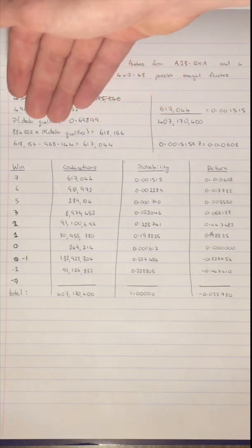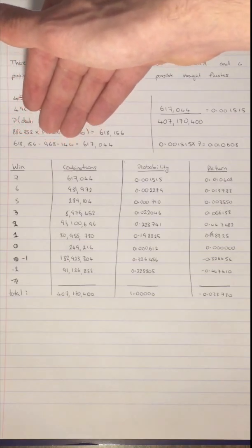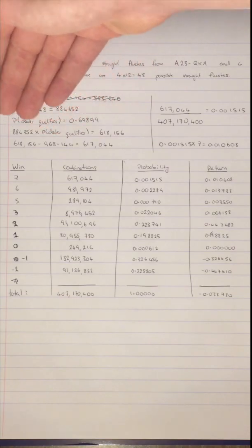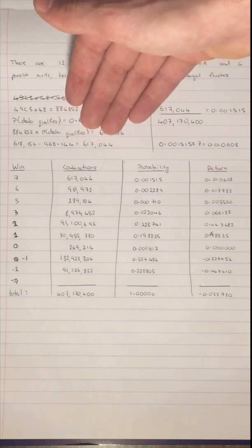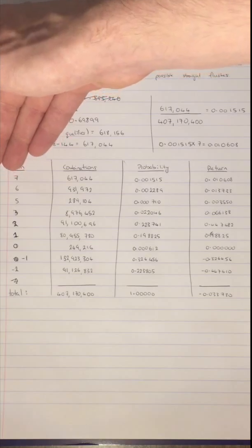However, in that, there are 968 possible combinations where the dealer wins and 144 possible combinations where the dealer draws. So, we minus these two values to gain 617,044 which is the amount of combinations for the win of 7 units.